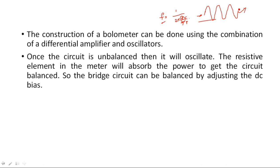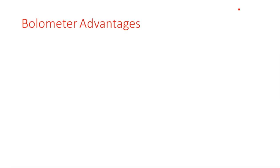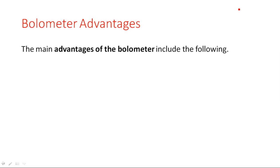Once the circuit is unbalanced, it will oscillate. The resistive element in the meter will absorb the power to get the circuit balanced again. The bridge circuit can be balanced by adjusting the DC bias supply — the VCC supply — to balance the oscillating circuit. The bolometer circuit can be arranged within the microwave field so the radiation can be absorbed through the element to increase the temperature and cause the change in resistance.